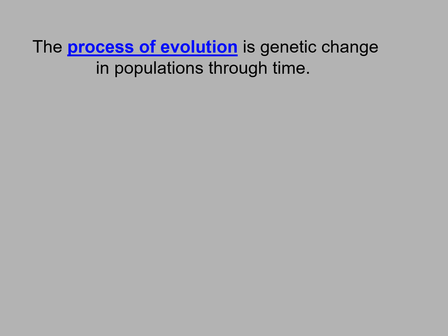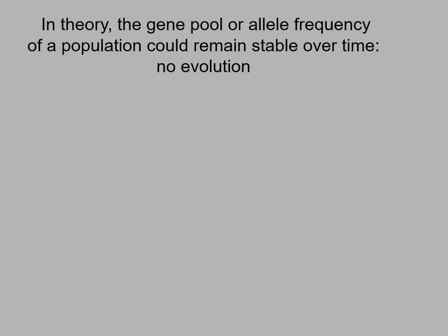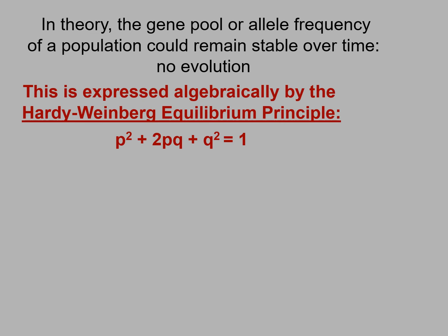The process of evolution is a genetic change in populations through time, and evolution is a change in allele frequency in a population over time. In theory, the gene pool or allele frequency of a population could remain stable over time — no evolution. This is expressed algebraically by the Hardy-Weinberg equilibrium principle: p squared plus 2pq plus q squared equals 1.